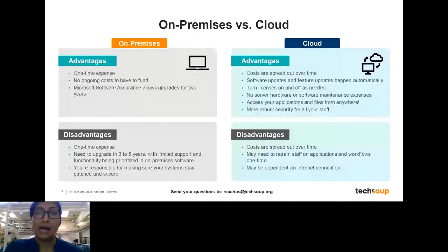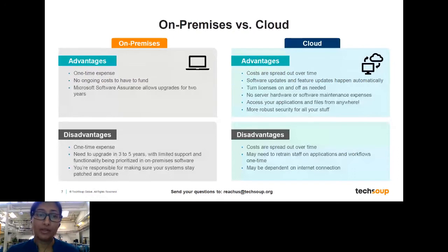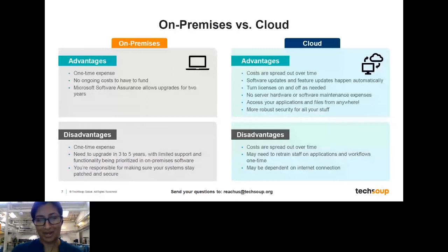One disadvantage of cloud solutions is that to use all of the robust features, you will need some stable internet connectivity. That's not always the case — we know that across America in rural areas or certain locations, connectivity can be an issue. One thing to point out is that many cloud solutions have desktop applications, so you don't always need to be online to use them. But for features like collaboration or automatic updates, you would need an internet connection.